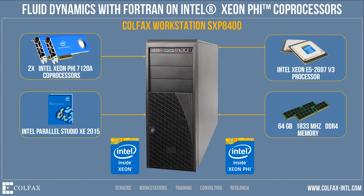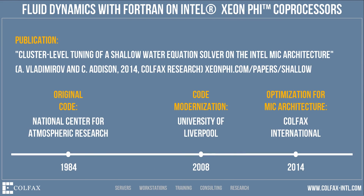The code was benchmarked on a Colfax SXP8400 workstation, which can support a two-way Intel Xeon CPU and up to three Intel Xeon Phi coprocessors. For more information about the system, visit colfax-intl.com. The code and the Colfax research paper describing this workload are publicly available.